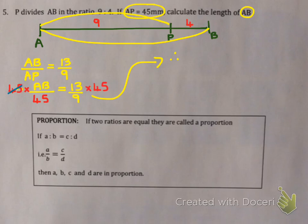I know that AP is 45mm and when I simplify I must get 13 over 9. So now this is an equation. I'm going to multiply by 45 on both sides. They're going to cancel. And I'm going to pick up my calculator and do 13 over 9 times 45, which gives me an answer of 65mm.